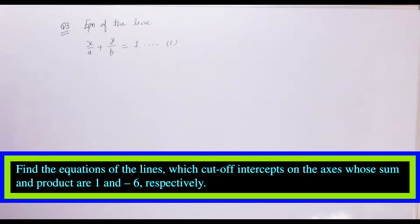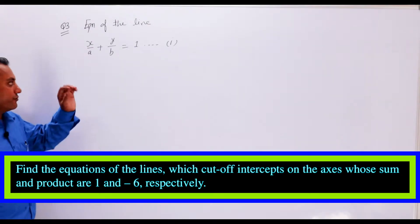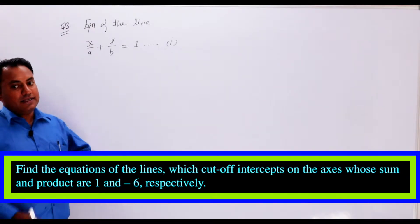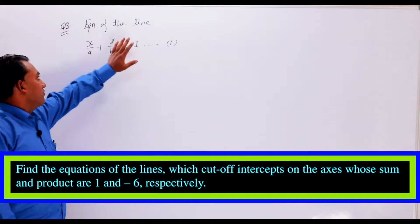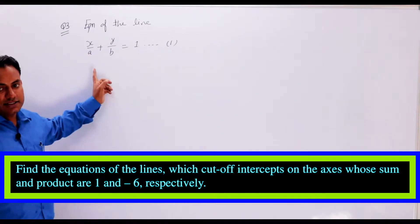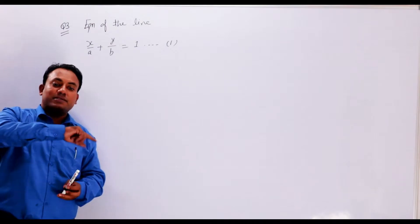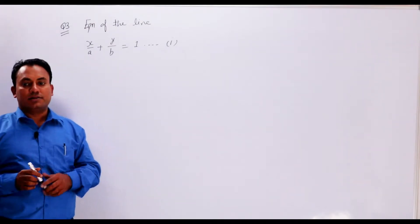Question number 3: Find the equations of the lines which cut off intercepts on the axes whose sum and product are 1 and minus 6 respectively. We have a question of line with intercepts. Sum is 1.